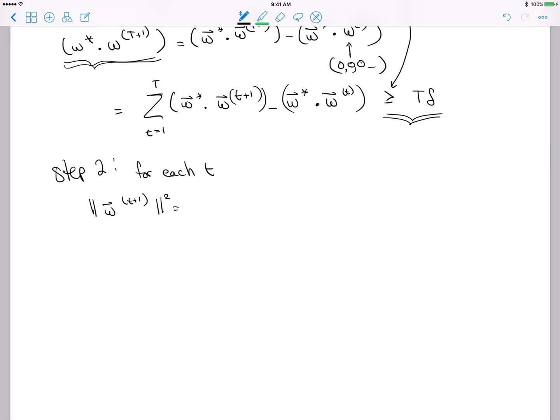Then here, the norm of Wt+1, I'm just going to write in the definition of Wt+1. This is straight from the perceptron algorithm here. At each T, Wt+1 is this.